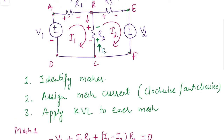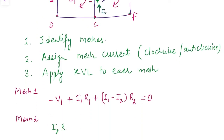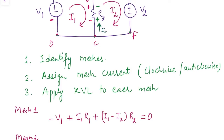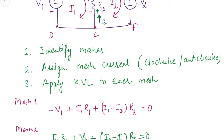Starting with the drop across R3, the positive sign comes first: plus I2·R3. Then moving to V2, positive sign comes first: plus V2. Then the drop across R2 — the resultant current in the upward direction is I2 minus I1 — giving plus (I2 − I1)·R2 = 0. These two equations are solved simultaneously to find I1 and I2, given the values of all resistances.